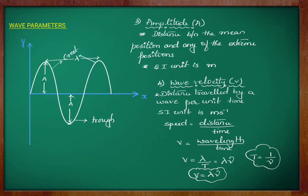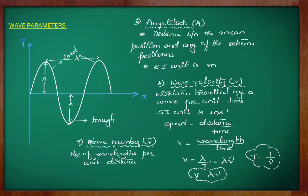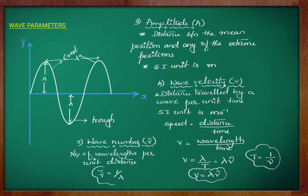Time period for a wave is the time taken to move through one complete oscillation. Wave number, denoted by nu bar, represents the number of wavelengths per unit distance. Nu bar is the reciprocal of wavelength. Hence, the SI unit for wave number is per meter.